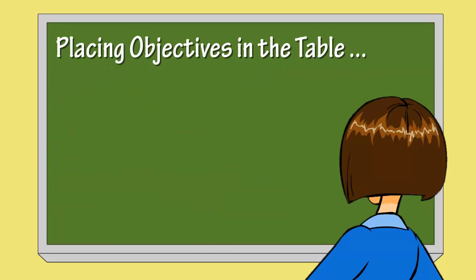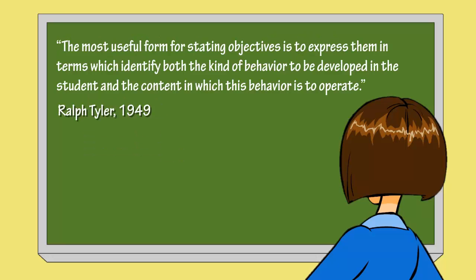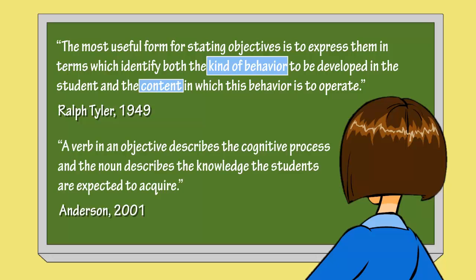So how does Ms. Williams place her objectives in the table? She can think in terms of content and knowledge. In 1949, Ralph Tyler, an American educator, stated: the most useful form for stating objectives is to express them in terms which identify both the kind of behavior to be developed in the student and the content in which this behavior is to operate. In 2001, Anderson and others suggested that a verb in an objective describes the cognitive process and the noun describes the knowledge the students are expected to acquire. Let's look at an example using Tyler and Anderson's suggestions.